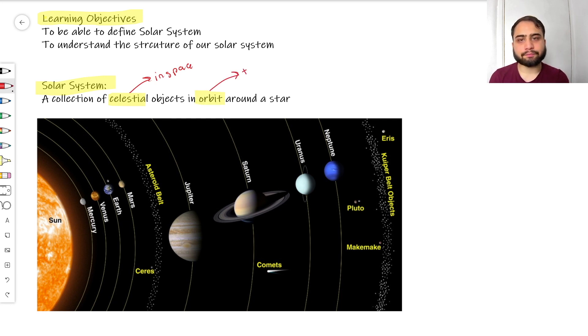If we remember, orbit really means to sort of circle. So if we have a star here, say our sun, an orbit would be the path that something traces around the actual central object itself. So a solar system is defined as a collection of celestial objects in orbit around the star.